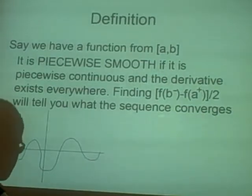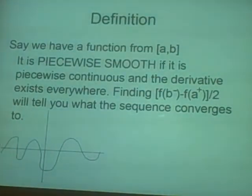Now this one's piecewise smooth. The function is piecewise smooth if first it is piecewise continuous, and secondly, you can find the derivative anywhere.